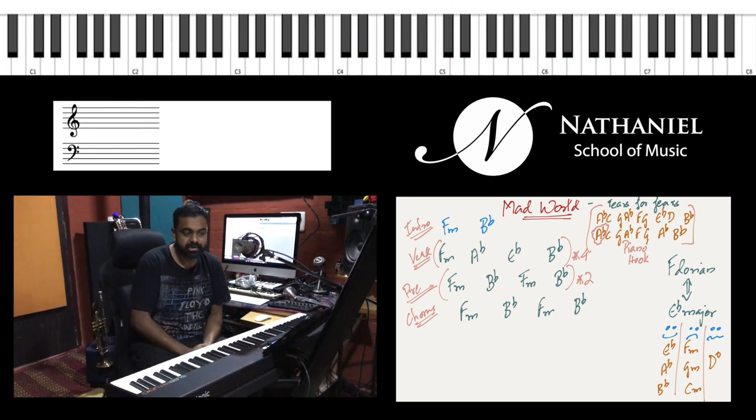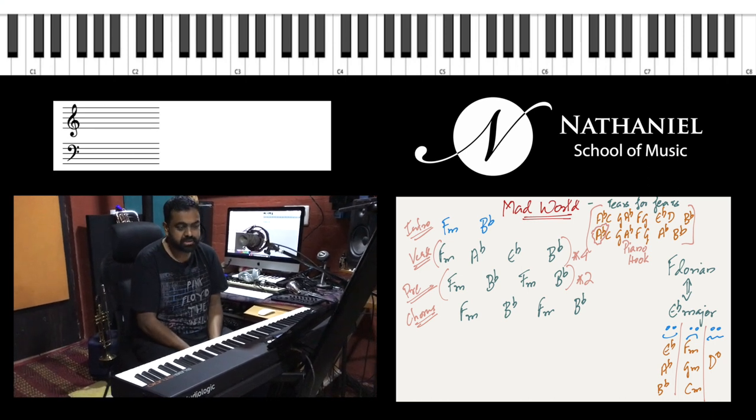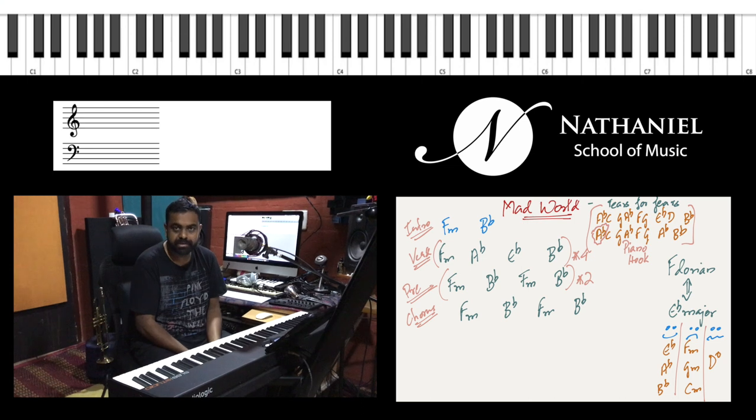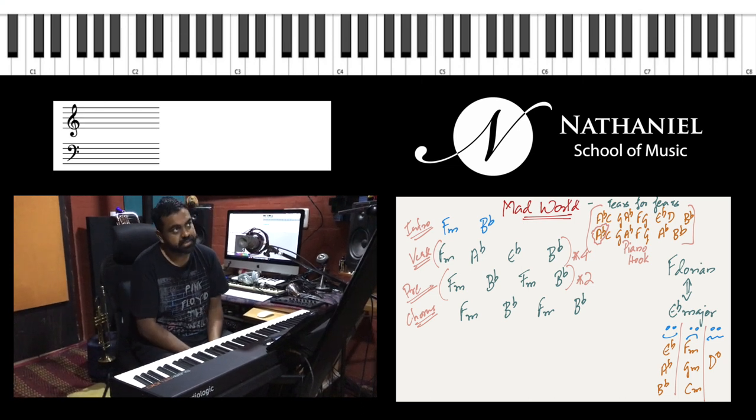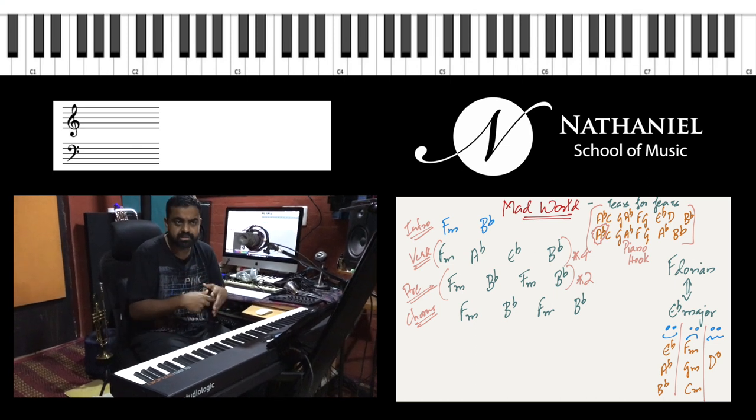Hi guys, so let's learn Mad World by Tears for Fears. The entire song is on the E flat major scale, but actually due to the way the chords are aligned in the song, you could say it's F dorian, which is a mode of the E flat major scale.